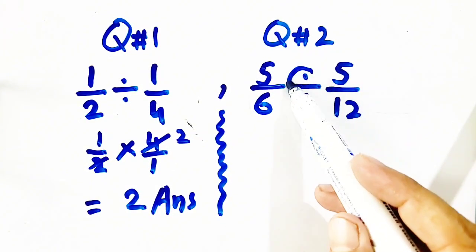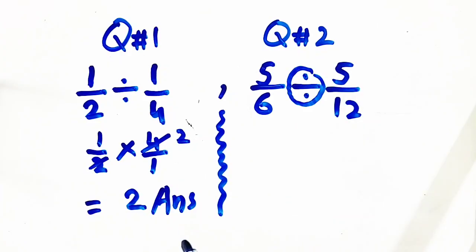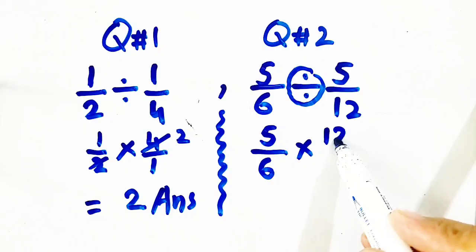So we have to change this division sign and convert it into multiplication and flip this one. So we will get 5 by 6 times 12 by 5.